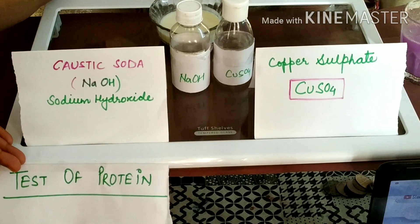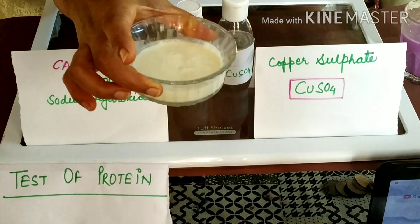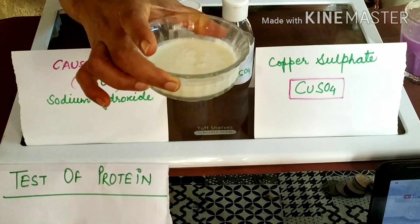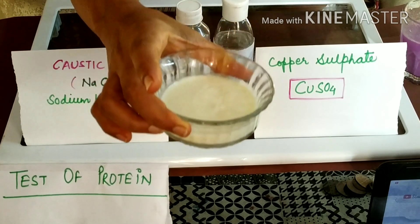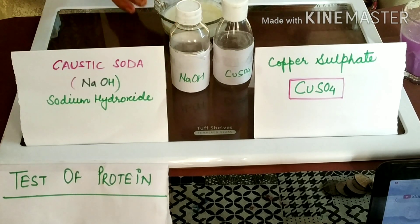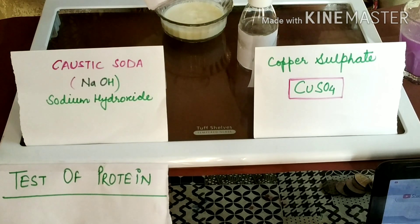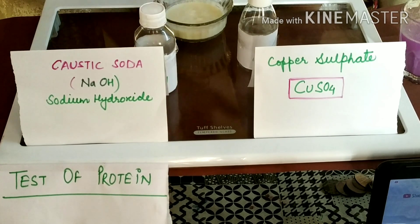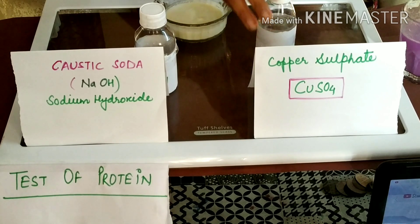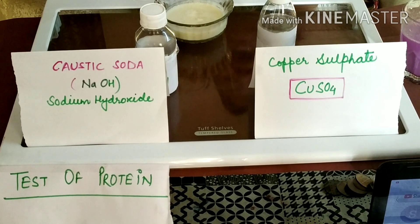Tell me what are the various sources of protein — write in the comment box. I have taken one source of protein, that is milk. Egg is also a good source of protein; the same experiment can be done with egg white. There are two chemicals used: one is called caustic soda, that is NaOH, and the other is copper sulfate, also known as neela thotha or blue vitriol. It is available in your chemistry lab.